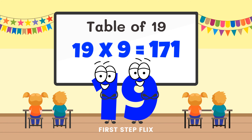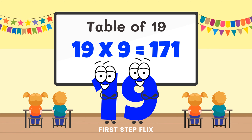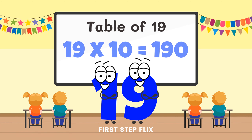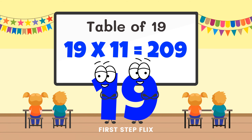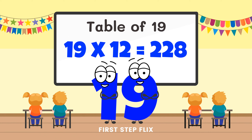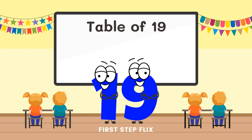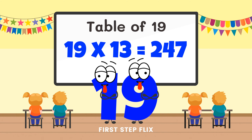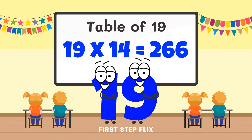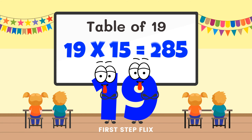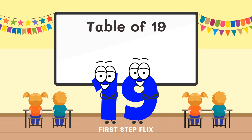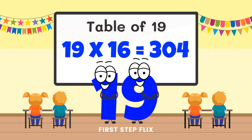19 nines are 171. 19 tens are 190. 19 elevens are 209. 19 twelves are 228. 19 thirteens are 247. 19 fourteens are 266. 19 fifteens are 285. 19 sixteens are 304.